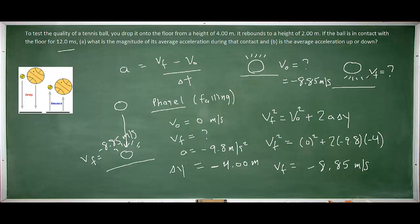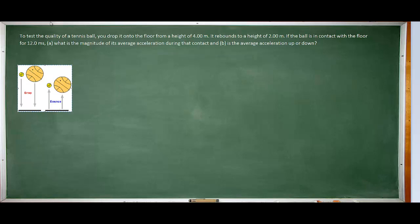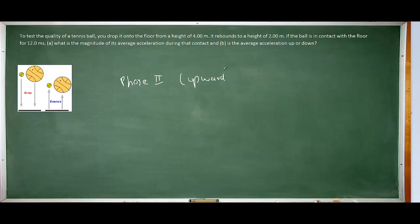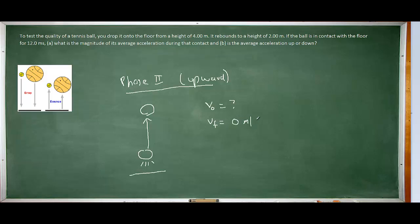Our next task is to calculate the final velocity of the tennis ball immediately after it is in contact with the ground. Let's examine phase two of the motion — as the ball returns to a vertical height off the ground, moving upward. During phase two, the ball is just leaving the ground and moving upward until it comes to rest at the top of its motion. We don't know the initial velocity with which the ball leaves the ground, so we'll use an unknown. The final velocity will be zero meters per second because it's returning to maximum height.